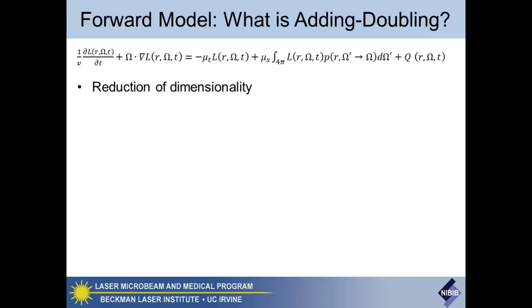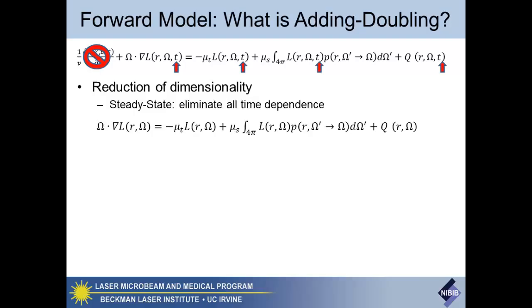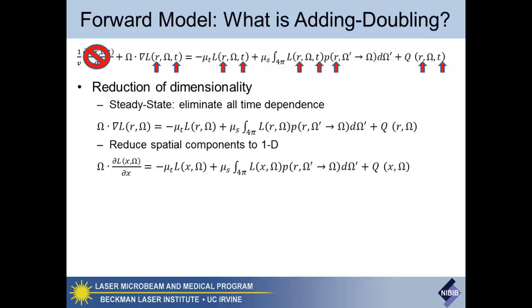Looking at the radiative transport equation in more detail: for adding-doubling, we reduce the dimensionality of this equation to simplify it. The first assumption is that everything's steady state — no time dependence — which allows us to get rid of the time differential and simplify our radiance to a six-dimensional parameter. Then we reduce the spatial coordinates down to one dimension, saying it only exists in x, meaning it's going to be completely homogeneous in the y and z directions.